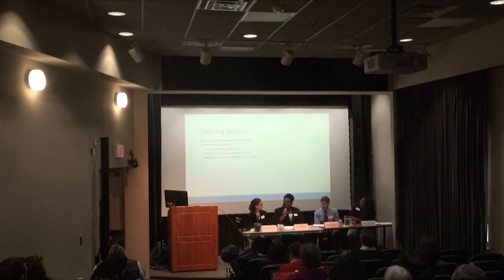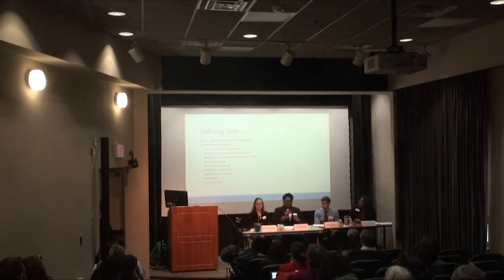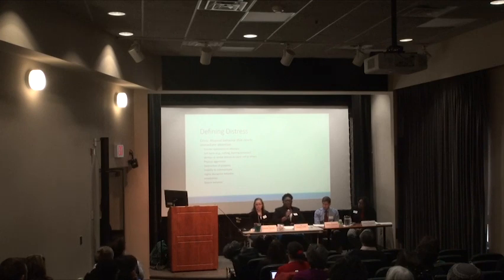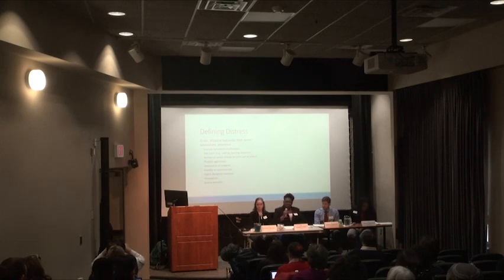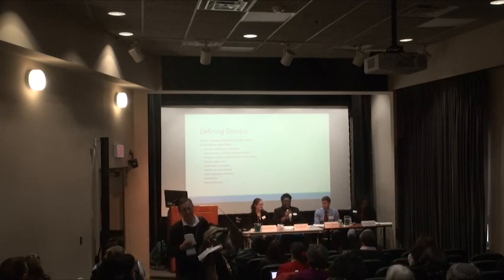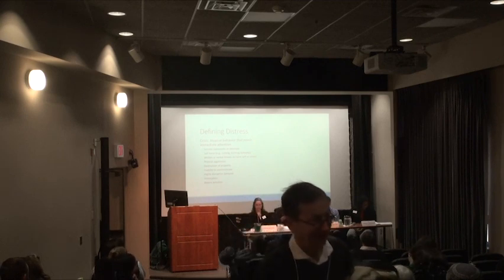Let's talk about how we define distress and crisis. There's a difference between the two. A crisis involves atypical behaviors that need immediate attention — I define it as a situation in which someone is threatening to harm themselves, someone is threatening to harm others, or you yourself in the room feel unsafe. At that point, make sure you take care of yourself and your students, and call AU Public Safety, whose extension is 3636. The good thing about our police department is that they have CIT training — crisis intervention training — so they have specialized training to talk to students who are having mental health concerns.